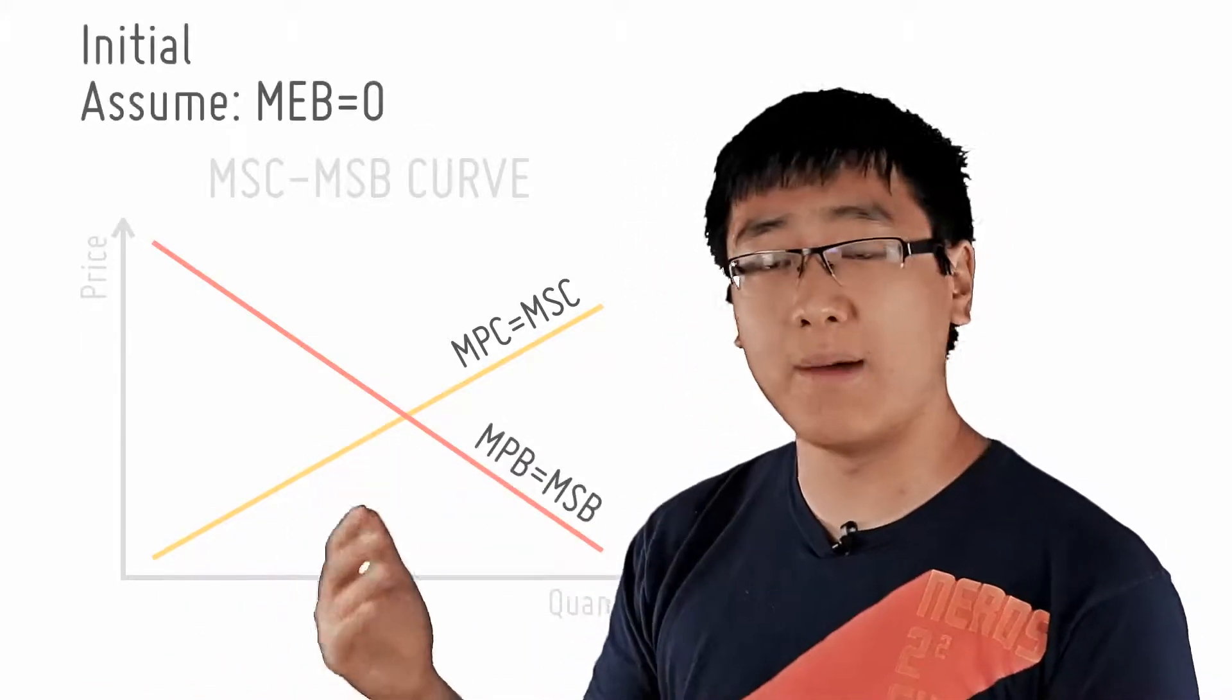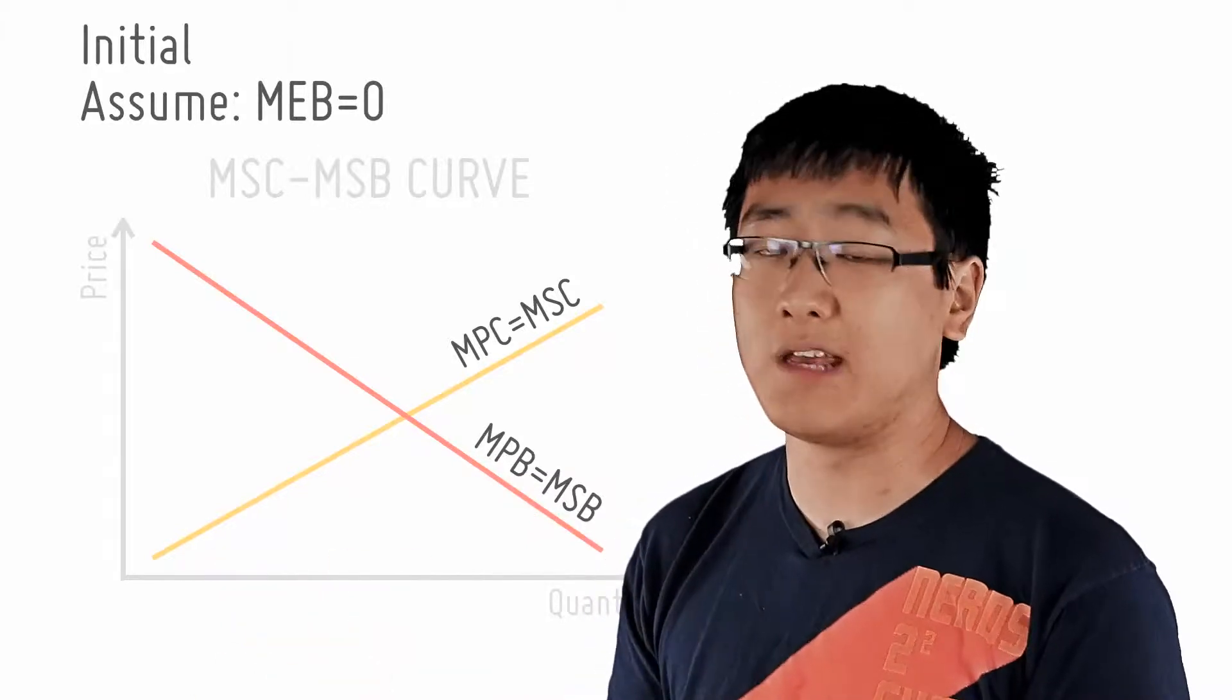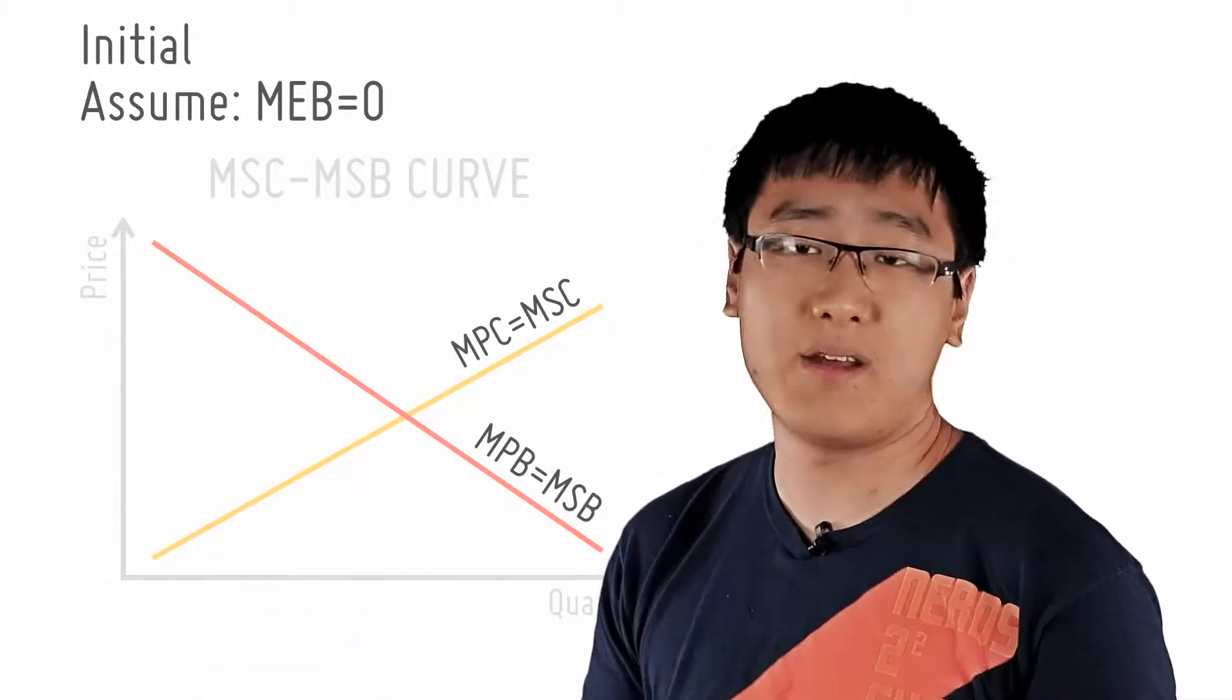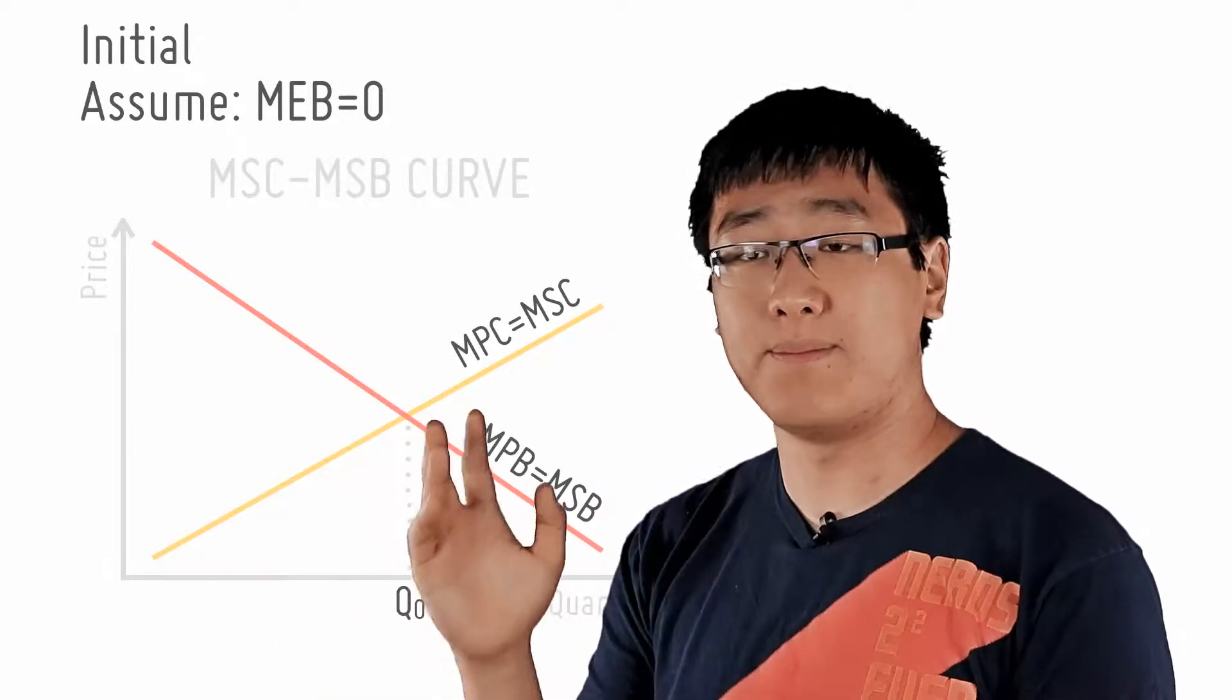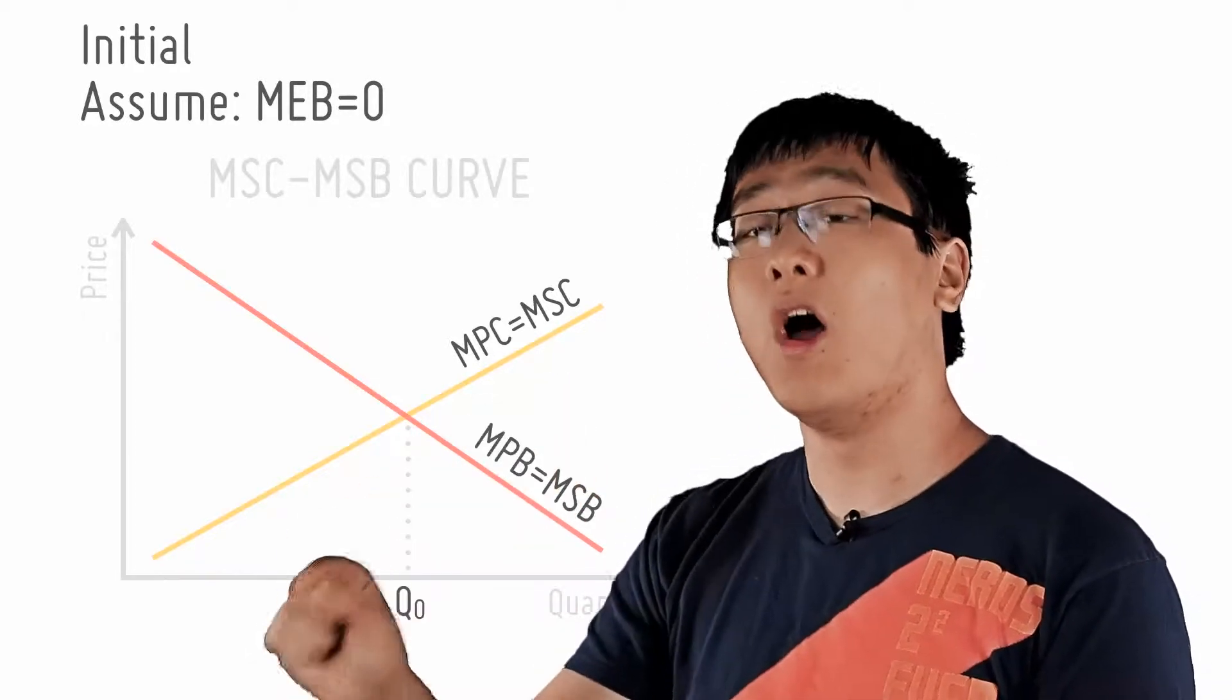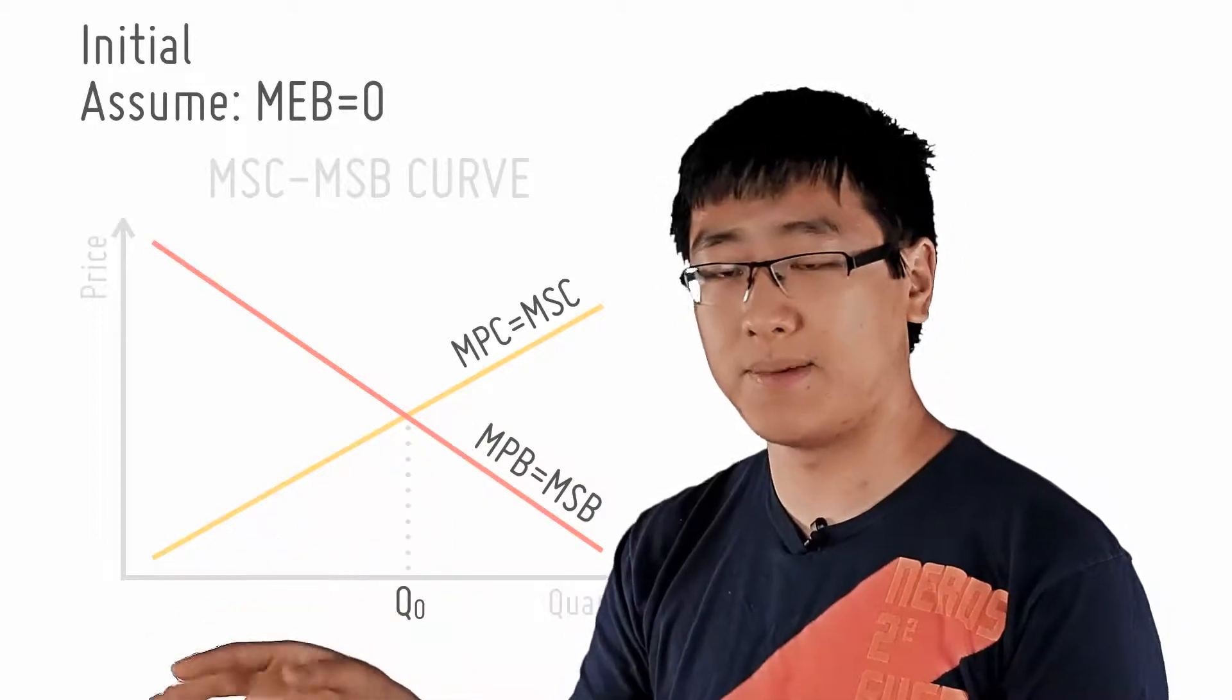Now let's make the initial assumption that MPB equals to MSB, i.e. there is no external benefits. Under this condition, I will consume where MPB equals to MPC since I as an individual only considers private costs and benefits.